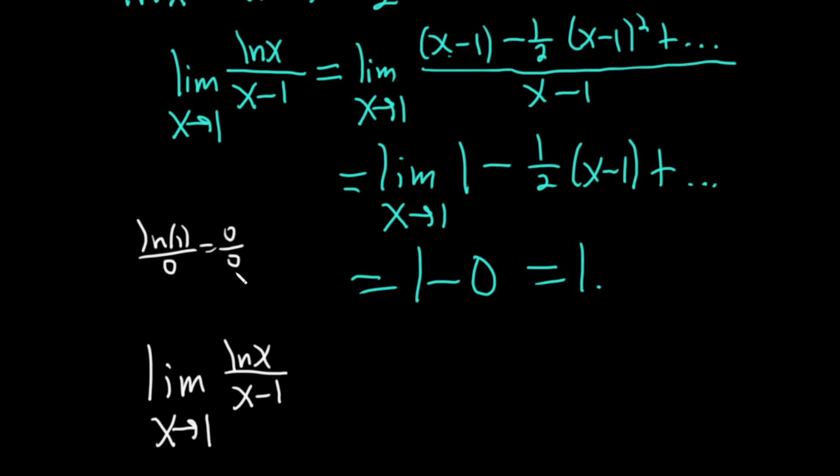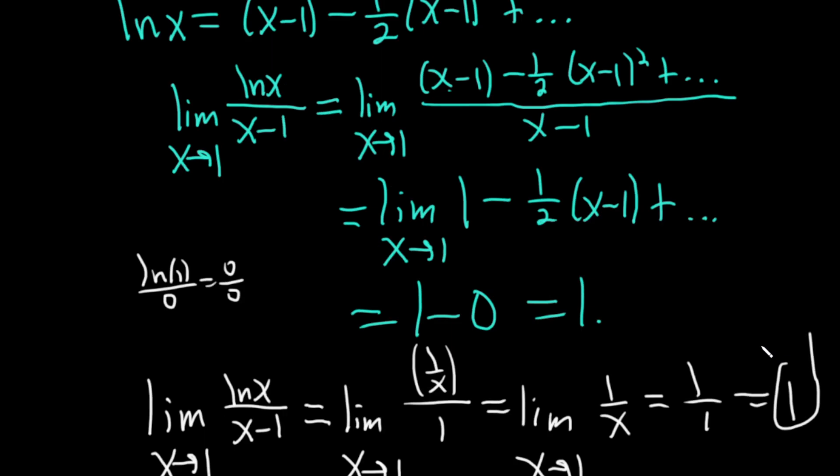So whenever you have a form like this inside a limit expression, this is a specific type of indeterminate form that allows you to use something called L'Hôpital's rule. L'Hôpital's rule says now that you just take the derivative of the numerator, which is 1 over x, and then the derivative of the denominator, which is just 1. So this is the limit as x approaches 1 of 1 over x. Plug in 1, you get 1 over 1, so you just get 1. So the answer is 1.